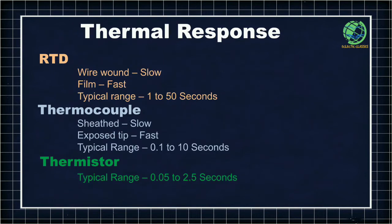When it comes to thermal response, thermistors have the fastest response time at 0.05 to 2.5 seconds. RTDs are the slowest among these three, with a thermal response time of 1 to 50 seconds. Thermocouples lie in between, with a thermal response time of 0.1 to 10 seconds.